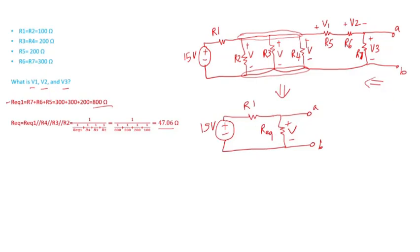R equivalent 2 is in series with R1, so I can redraw the circuit. This is R equivalent that I calculated, and voltage V will drop across it. Since R equivalent is in series with R1, I can use voltage division. V equals 15 volts times R equivalent divided by R equivalent plus R1. If I carry out the calculation, I get 4.8 volts.